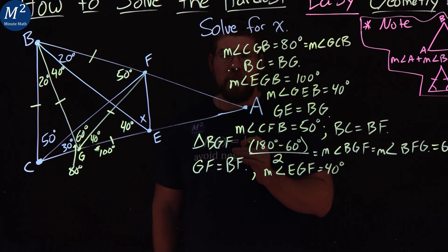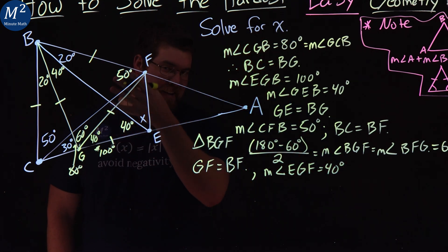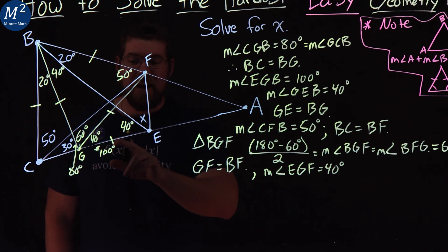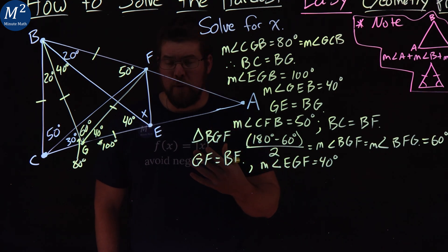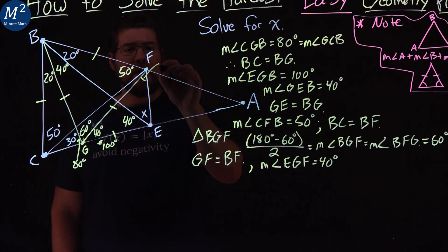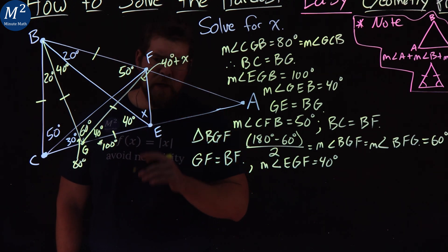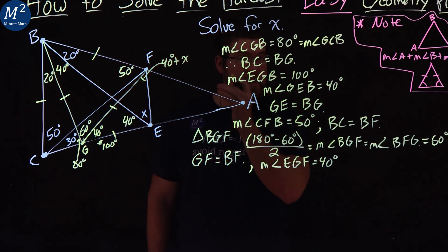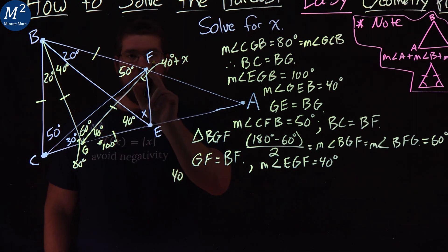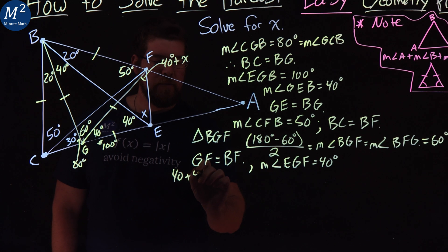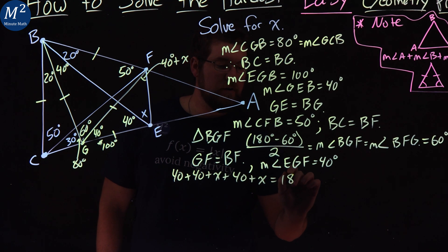We now have enough information really to solve this problem. Notice again our isosceles triangle. And again, not really drawn to scale, but GE and GF are the same length, meaning that their base angles are congruent. So that means that this angle right here, I can write as 40 plus x degrees. And we know that all triangles add up to be 180 degrees on the interior angles. So let's go add them up. We have 40 right here for angle FGE plus that 40 plus x plus 40 plus x a second time. And that's equal to 180 degrees.